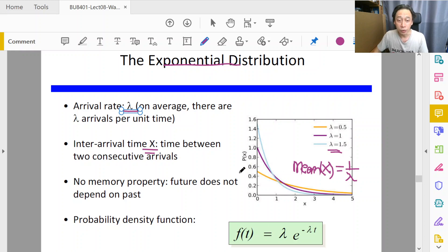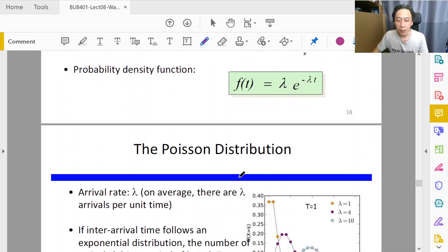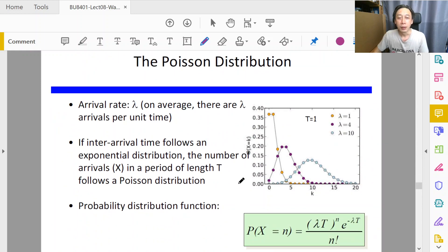So that is for exponential distribution. Let's look at Poisson distribution. Poisson distribution, on the other hand, is a discrete distribution, so we see that at every given number here—zero customers per fixed interval.